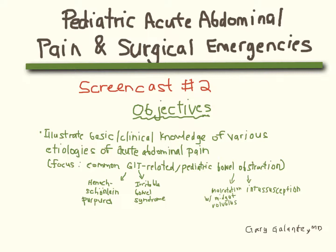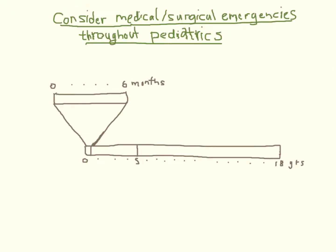We will progress from newborn to adolescence and address some age-specific considerations requiring urgent or emergent attention. Most urgent or emergent conditions causing abdominal pain peak in incidence at a specific age, which will help determine the likelihood of a condition presenting at that time. The scheme here considers the 0-6 month, 6 months to 5 years, and 5-18 year ranges as the most distinct.